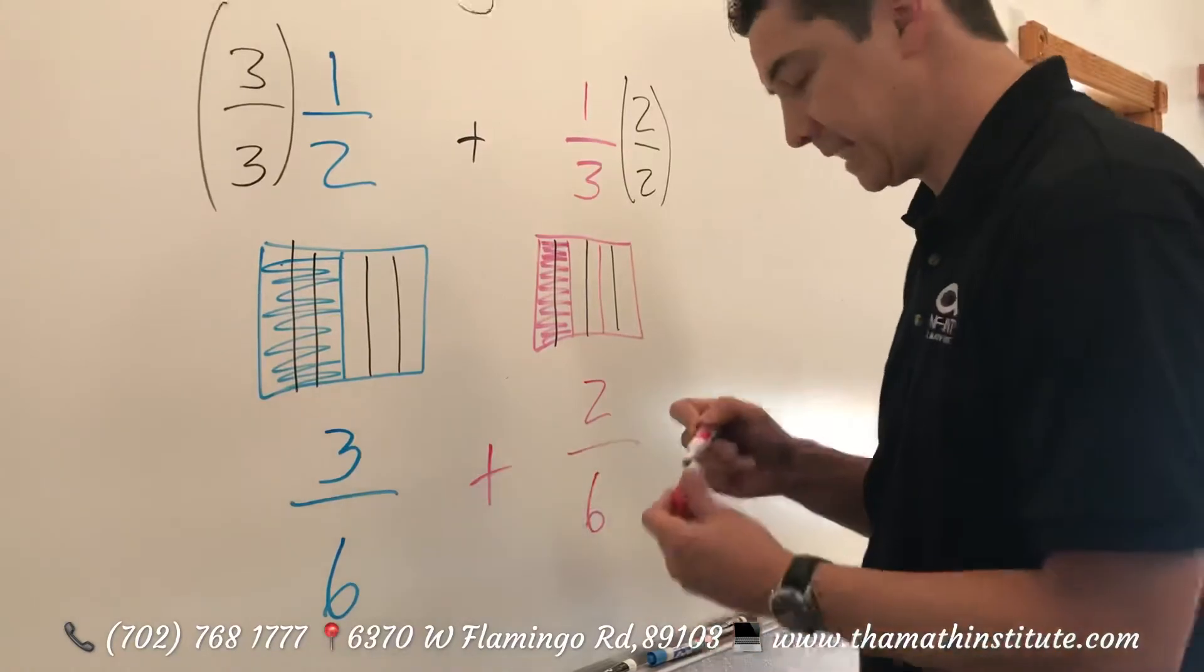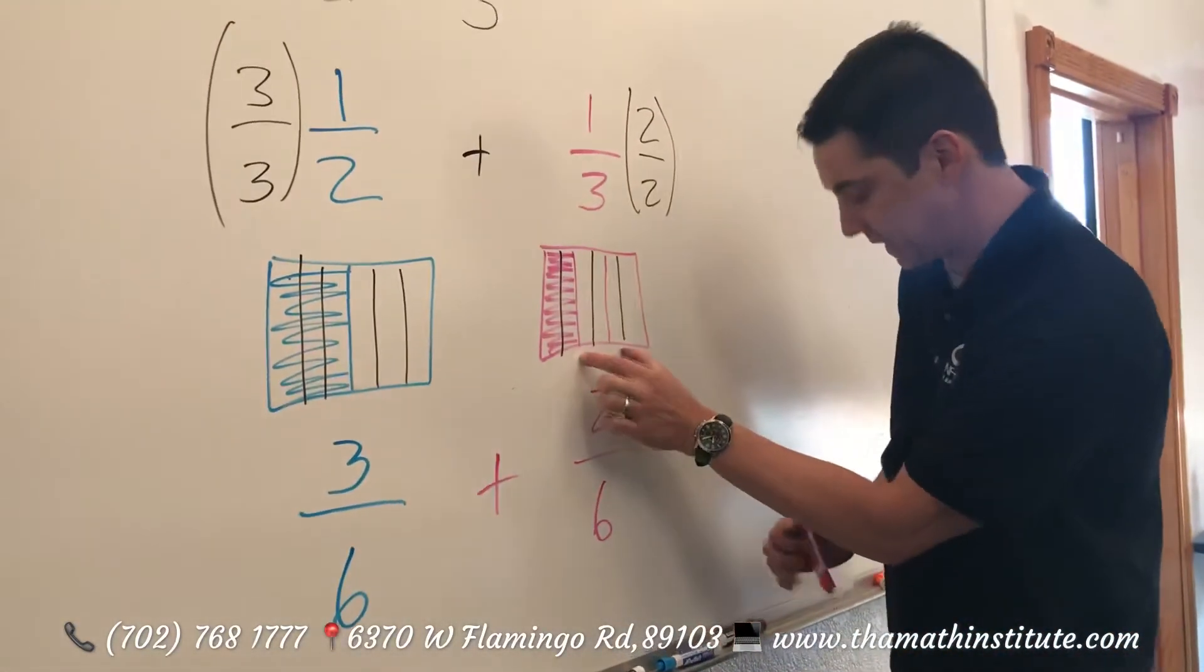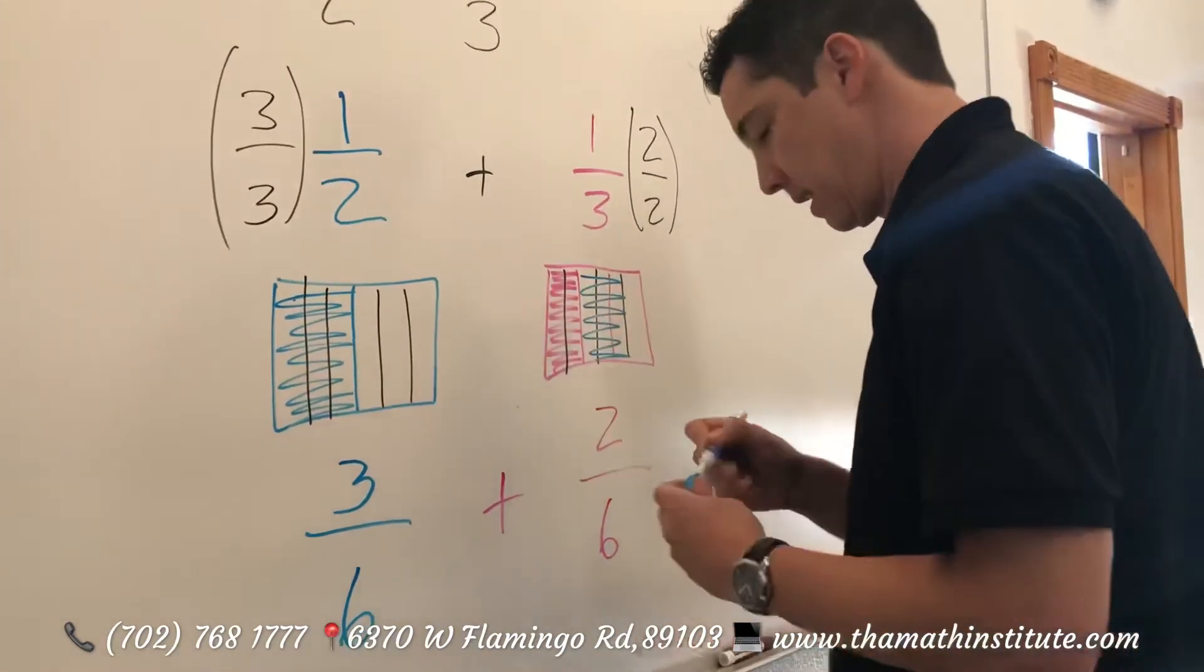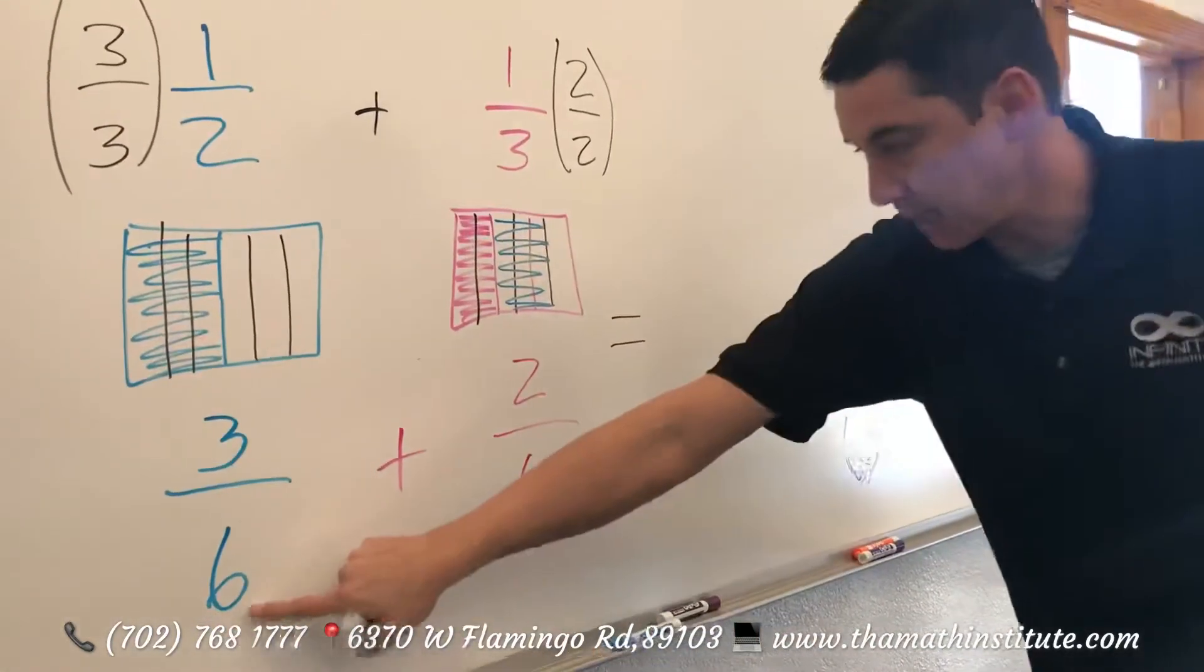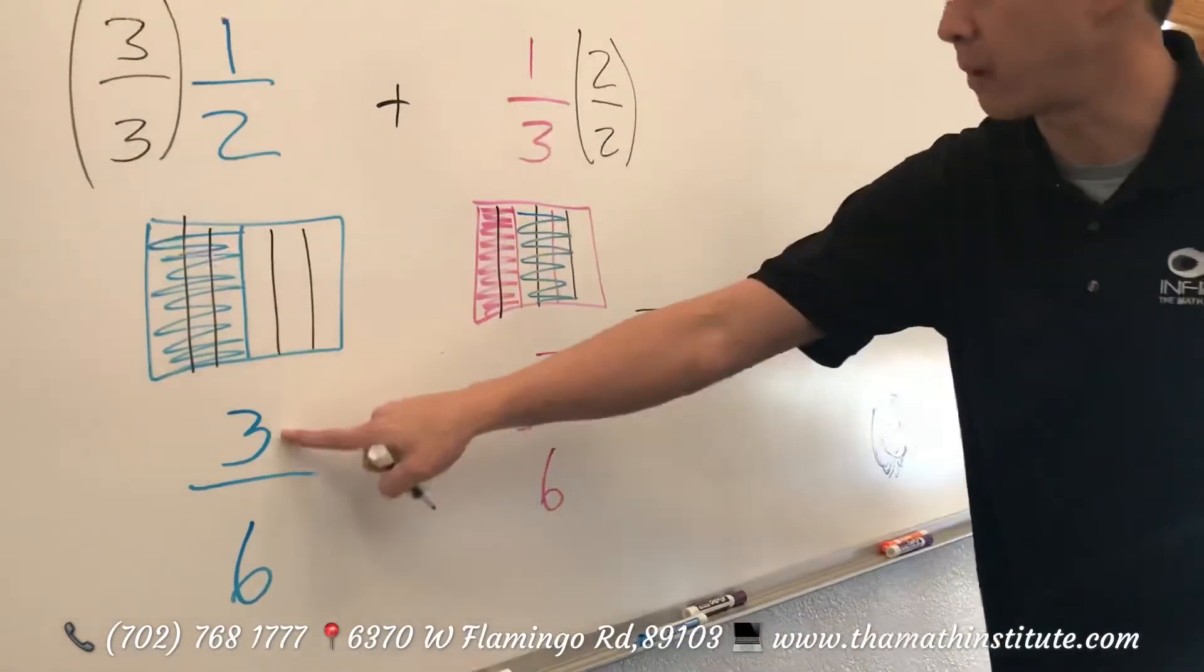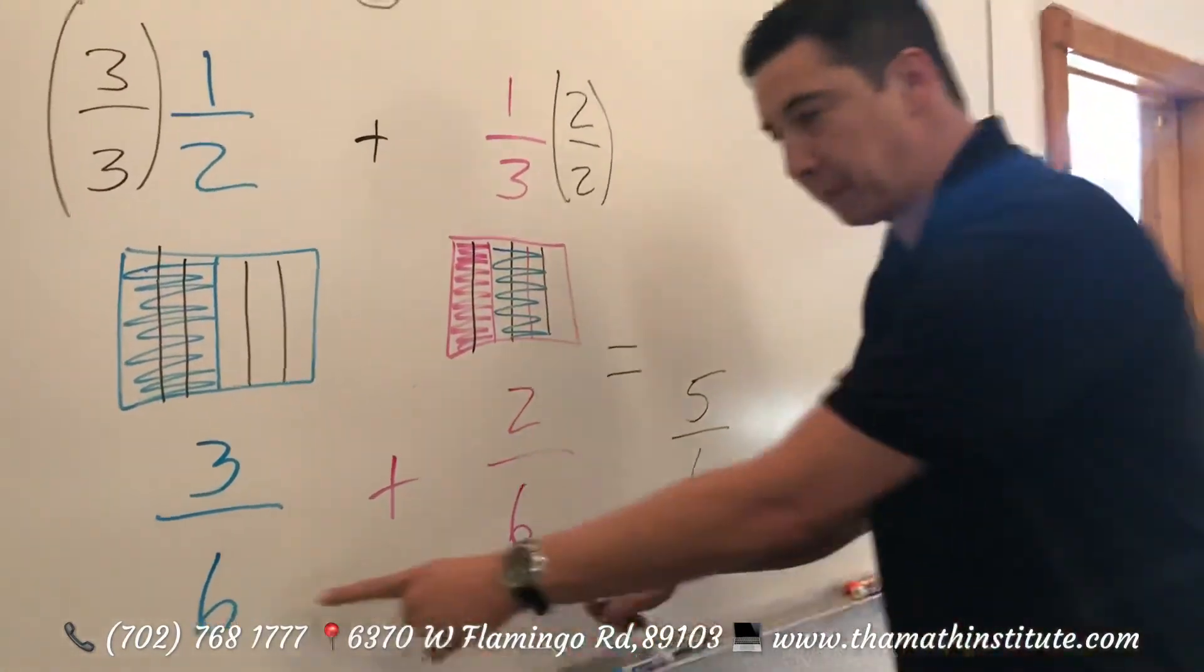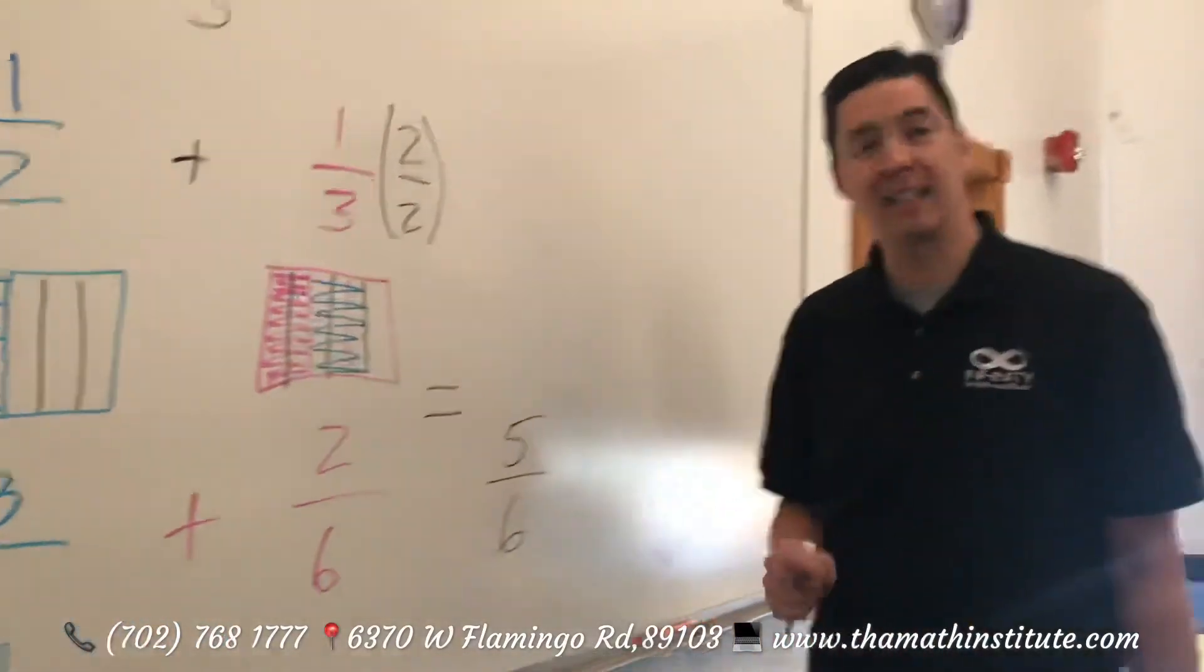And now we can see how we can take these three sixths and put them into these two sixths. And notice we're still having them cut up in six pieces, but we're counting five of them. That's why you keep the denominator but add the numerators. Addition with fractions.